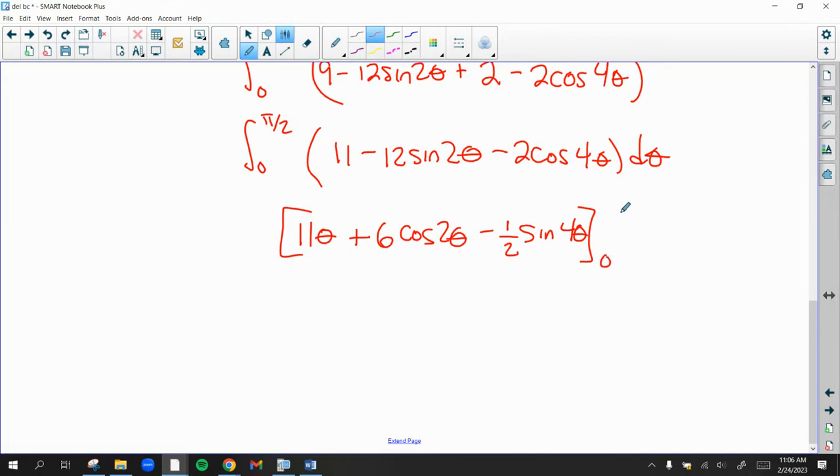And we're going to plug in 0 to pi over 2. Now, this looks like it should work out nicely because we're going to get a lot of sines and cosines of pi's or multiples of pi. But let's just do it. So 11, we're going to plug in the pi over 2. 11 times pi over 2 is obviously 11 pi over 2 plus 6 cosine of pi. And you plug in pi over 2 minus 1 half sine of 4 times pi over 2, which is 2 pi. Then minus.